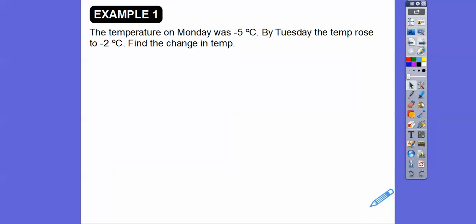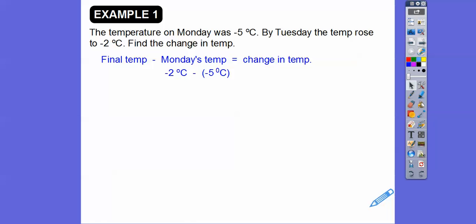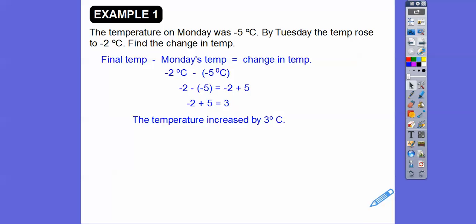After removing the negative 8 counters, we're left with 13 positive counters — same result. The temperature on Monday was negative 5 degrees Celsius. By Tuesday the temperature rose to negative 2 degrees Celsius. To find the change: final temperature minus Monday's temperature — negative 2 minus negative 5. Add the opposite: negative 2 plus 5. On a number line, go to negative 2 then move 5 in the positive direction, reaching 3. So the temperature increased by 3 degrees.